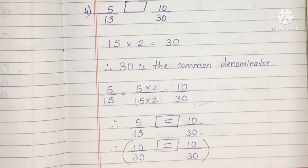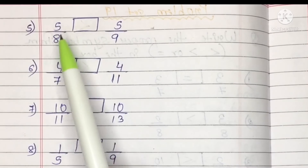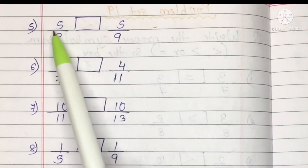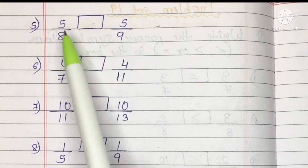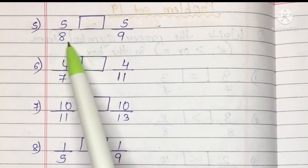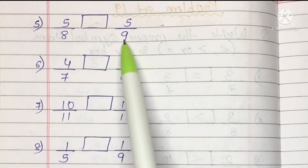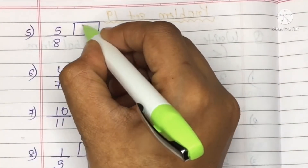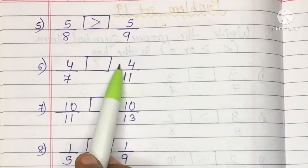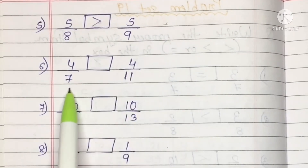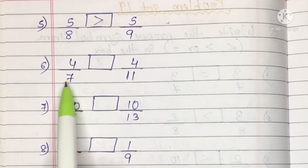Question 5: 5 upon 8 and 5 upon 9. The numerator is common, so the denominator is the deciding factor. The smaller the denominator, the greater the fraction's value — 8 is smaller, so 5 upon 8 is greater. Question 6: 4 upon 7 and 4 upon 11. Same numerator, so denominator decides — 7 is smaller, so 4 upon 7 is greater.